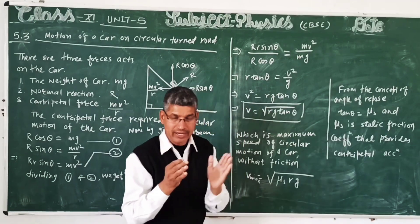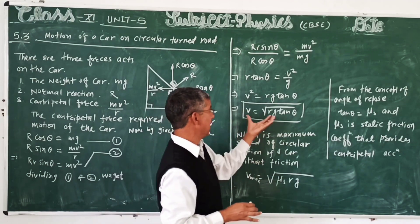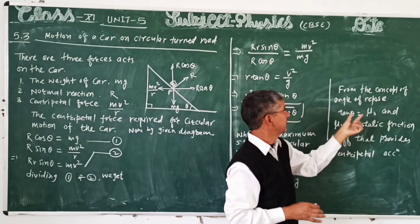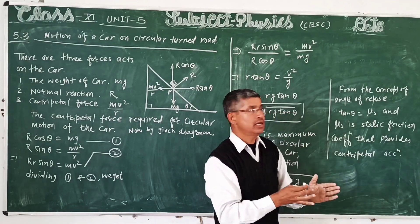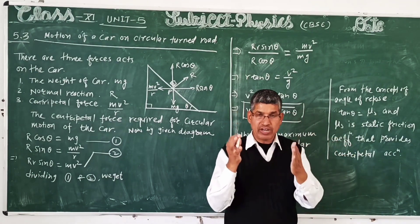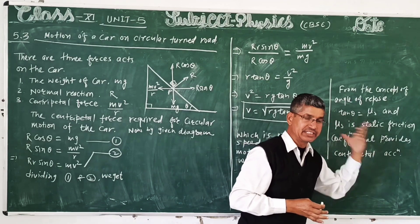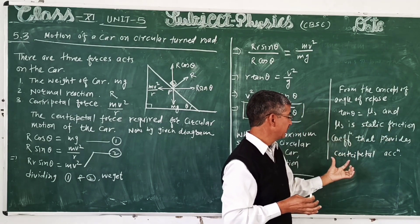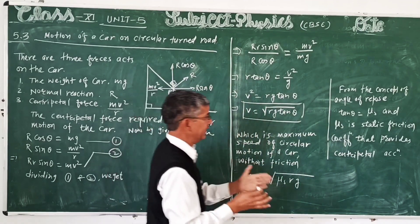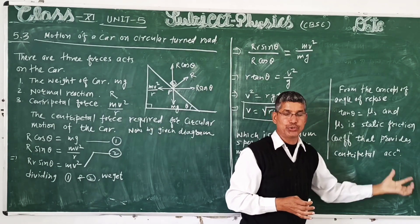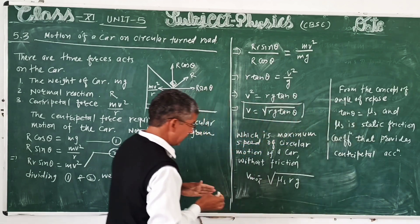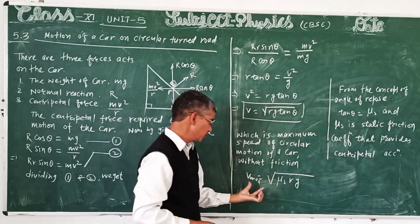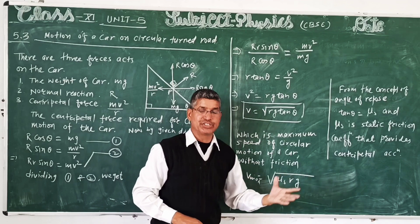Here we take tan theta from the concept of angle of repose. Tan theta per mu_s, where mu_s is the static friction coefficient that provides centripetal acceleration. We can move the car with friction coefficient providing centripetal acceleration.